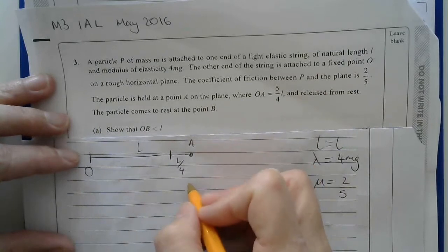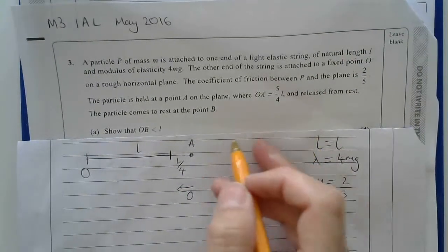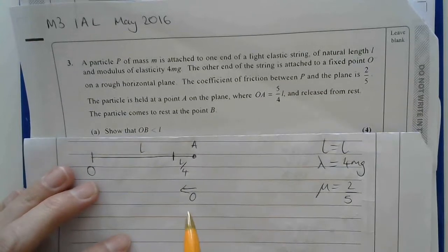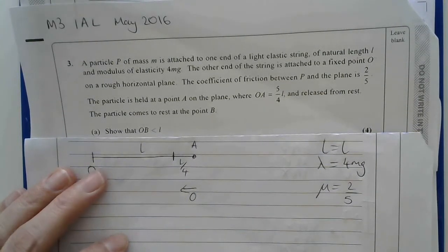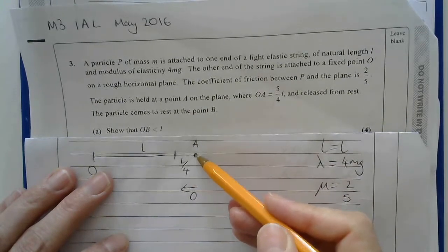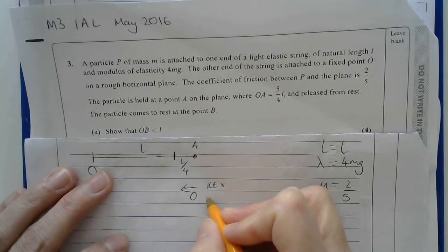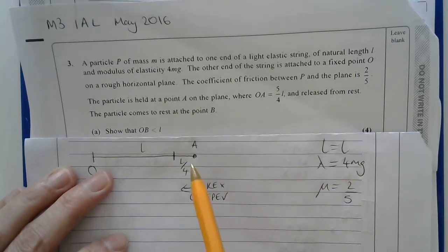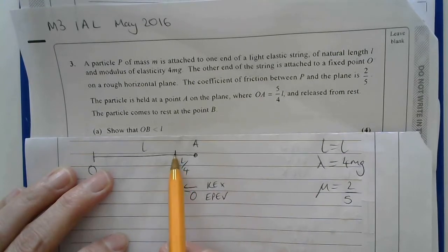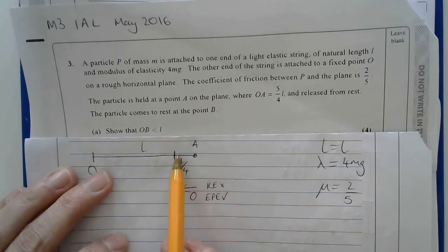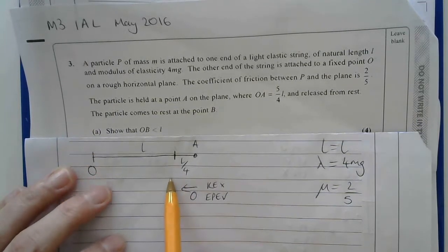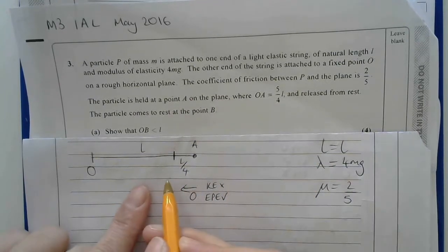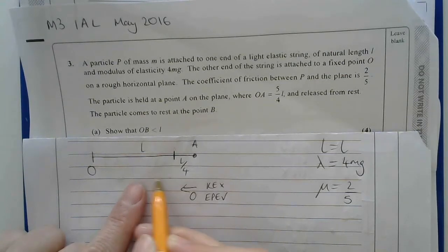It's released from rest, so here there is no kinetic energy. The particle comes to rest at point B. When it's here, there's no kinetic energy but there's some elastic potential energy. Up to this point there will be some elastic potential energy, but when it gets to the natural length, the elastic potential energy will be 0. Because this is a string and not a spring, once it moves over here, there's no change in the elastic potential energy as it moves.